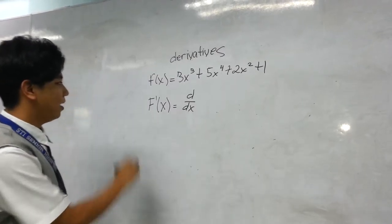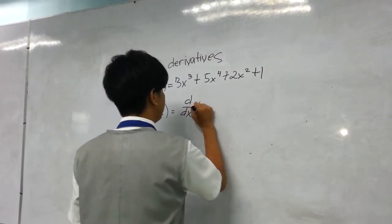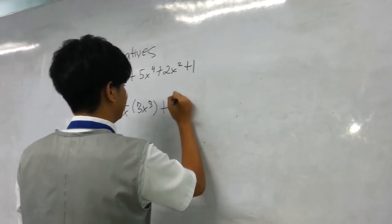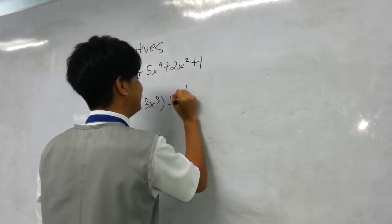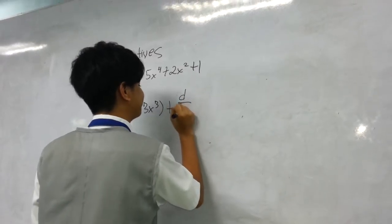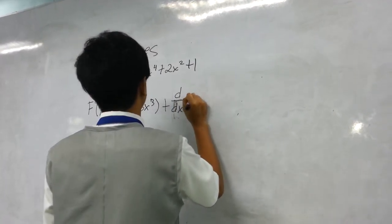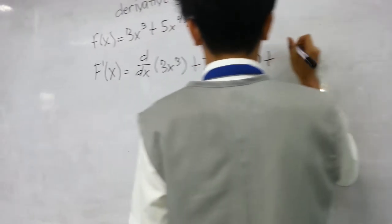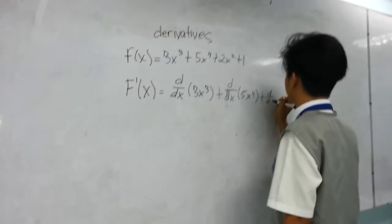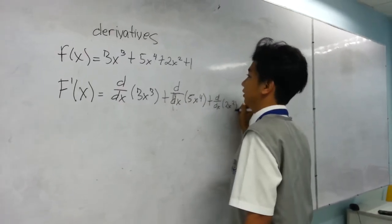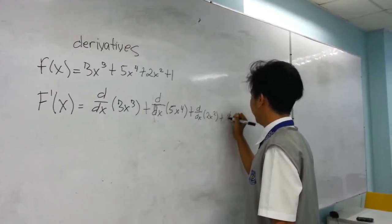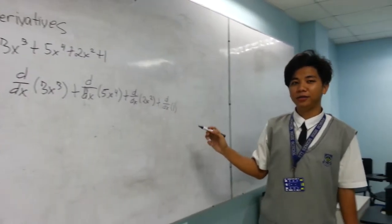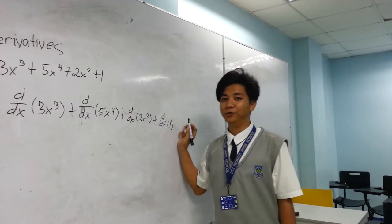Here it is. And now, f prime of x is equal to d/dx of 3x cubed plus d/dx of 5x to the 4th, plus d/dx of 2x squared plus d/dx of 1. The constant of any number is always 0.